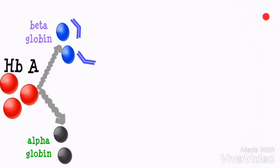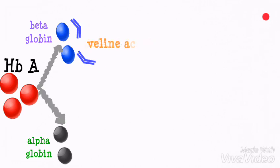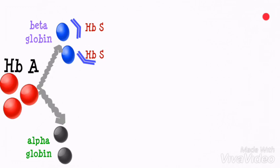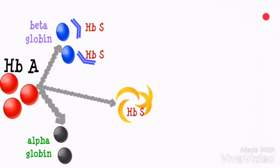In sickle cell disease, the beta globin molecules are misshapen due to mutation changes, which result from the displacement of glutamic acid — normally found in beta globin molecules — by valine acid, which is abnormal. Because of these mutation changes, the hemoglobin will now be called HbS, or hemoglobin S, which is abnormal, and it causes red blood cells to change into a sickle shape. The red blood cells also become rigid, rough, and stiffened in the blood vessels, blocking blood flow.